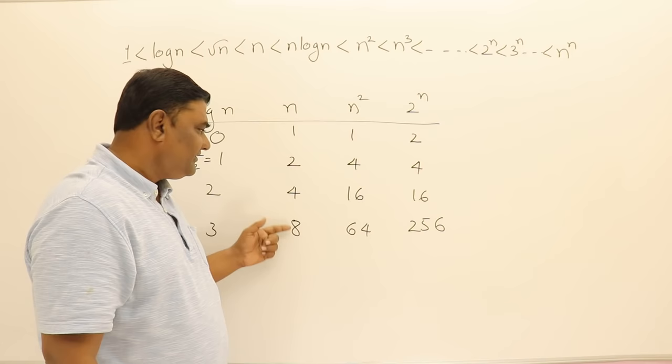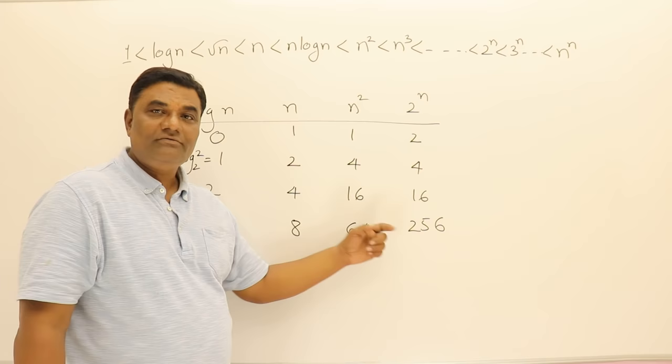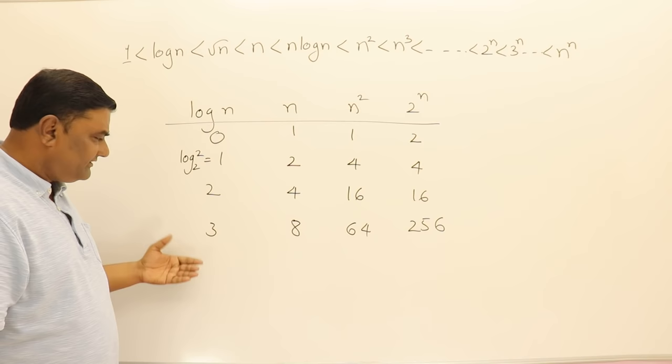See I have taken 8 here so this is a slower growth and this is a very faster growth in the value. So that is 2 power n and you can see that now if you go on putting the values this is less than this one and this is less than this one.